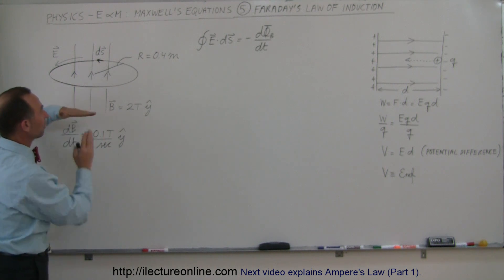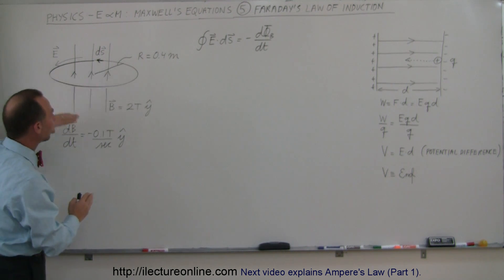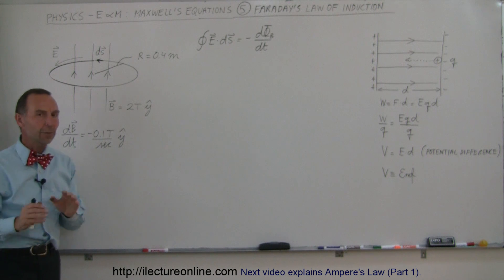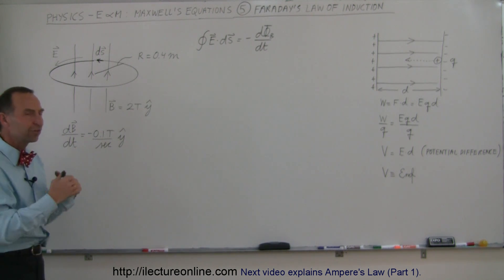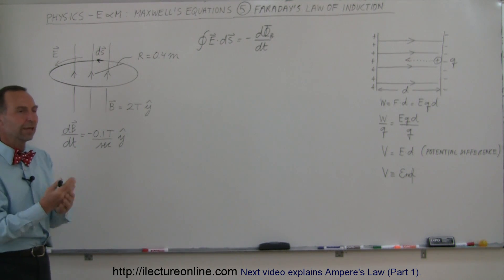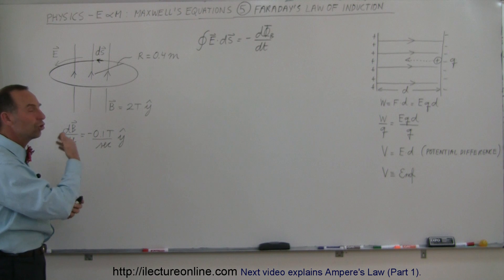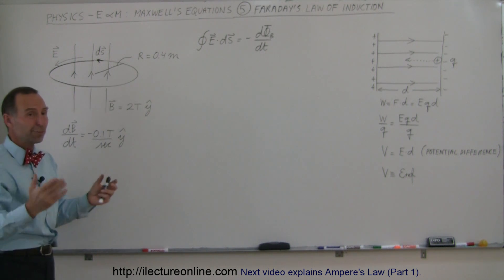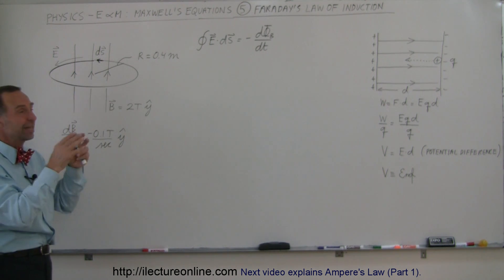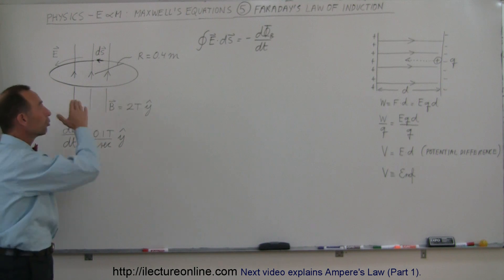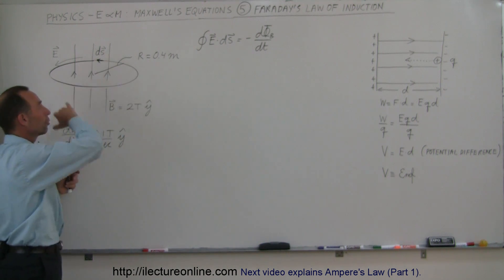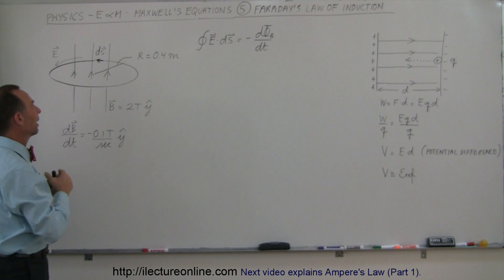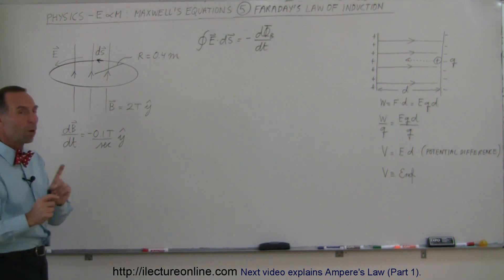The B field is simply perpendicular to the plane made by the loop. Now if the B field is continuous and not changing, then nothing will happen in the loop. There will simply be a B field — no current flowing through the loop, no potential difference or EMF across the loop, nothing like that.